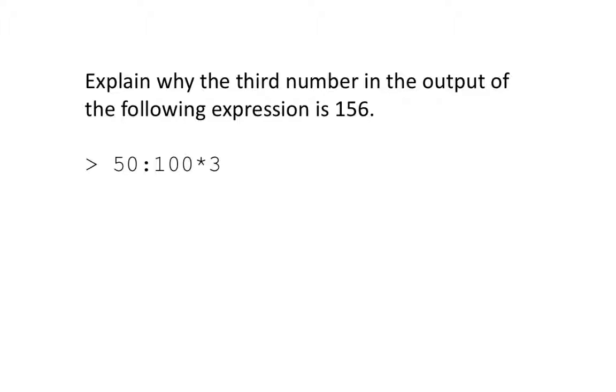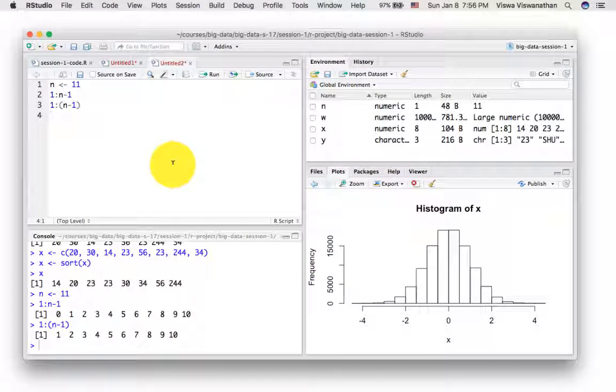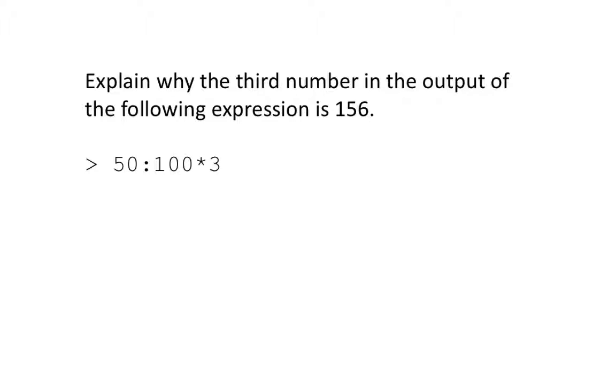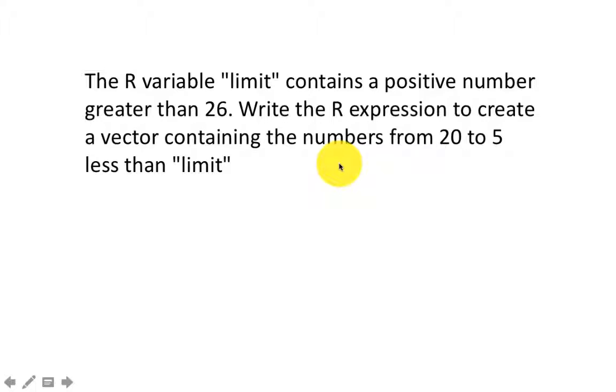Here is a sequence. Explain why the third number in the output of the following expression is 156. If you run it, 50:100*3, the third number you will see is 156. So the question is, why is this 156? The answer is that colon has precedence. So what it does is it first generates the sequence 50 to 100. So the sequence will start with 50, 51, 52, 53, 54, et cetera. And then you're multiplying each element by 3. So the third element was 52. Multiplied by 3, you get 156. So that's what you expect.